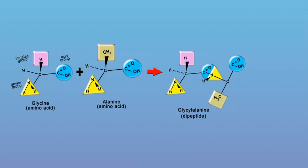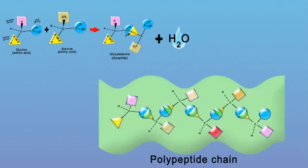The acid group of glycine loses an atom of hydrogen and an atom of oxygen. The amino group of alanine loses an atom of hydrogen. These atoms combine to form a water molecule. More peptide bonds can form in the same way, creating a chain of amino acids called a polypeptide.